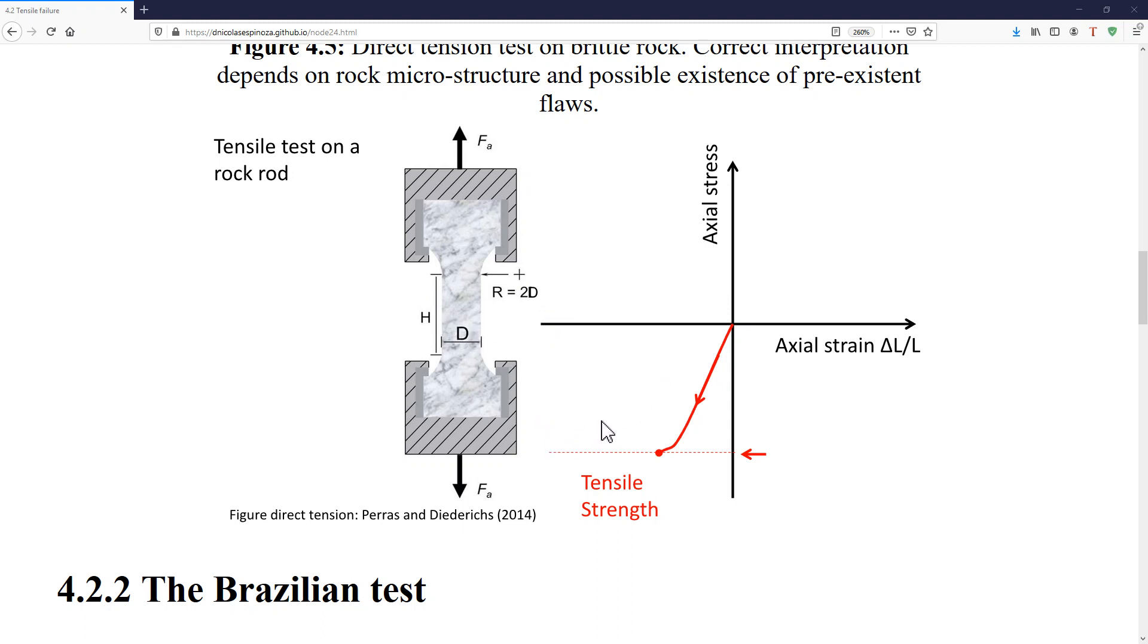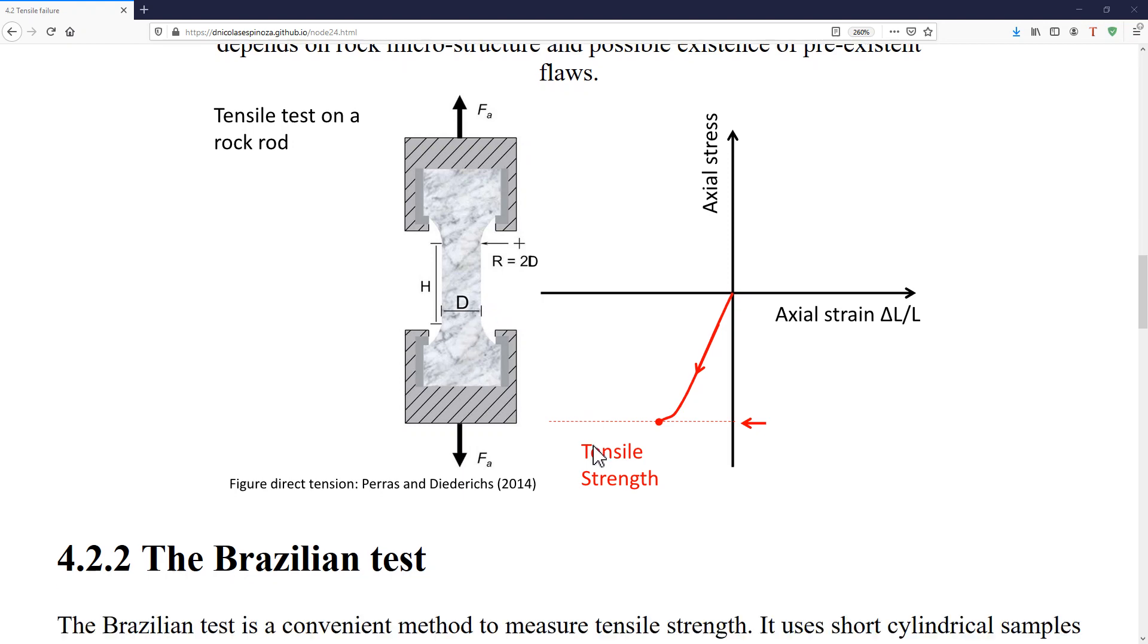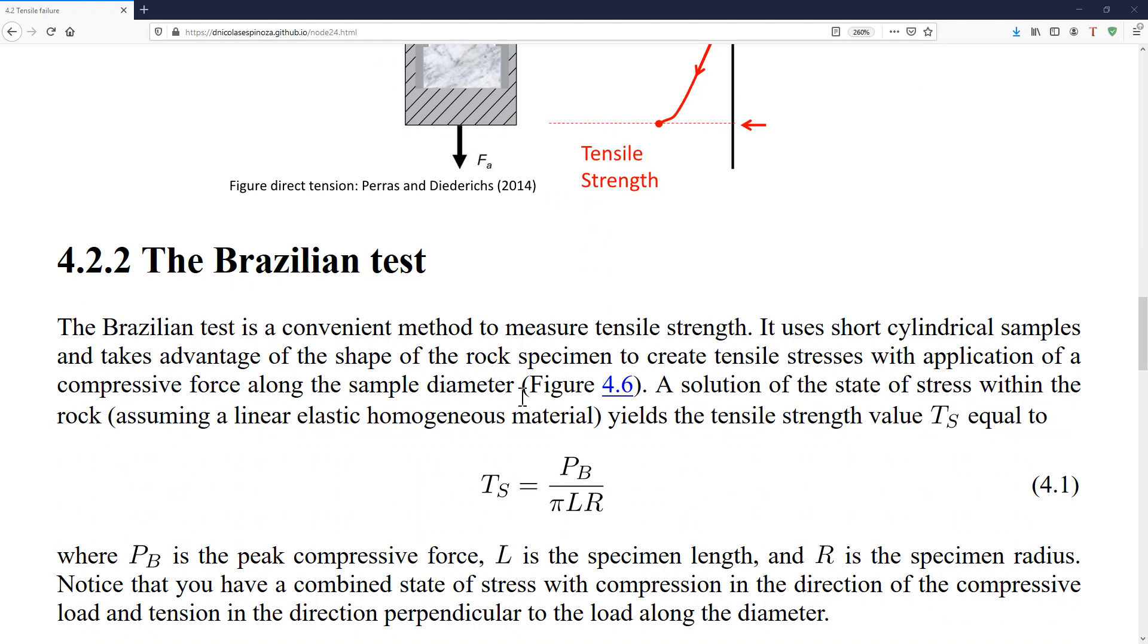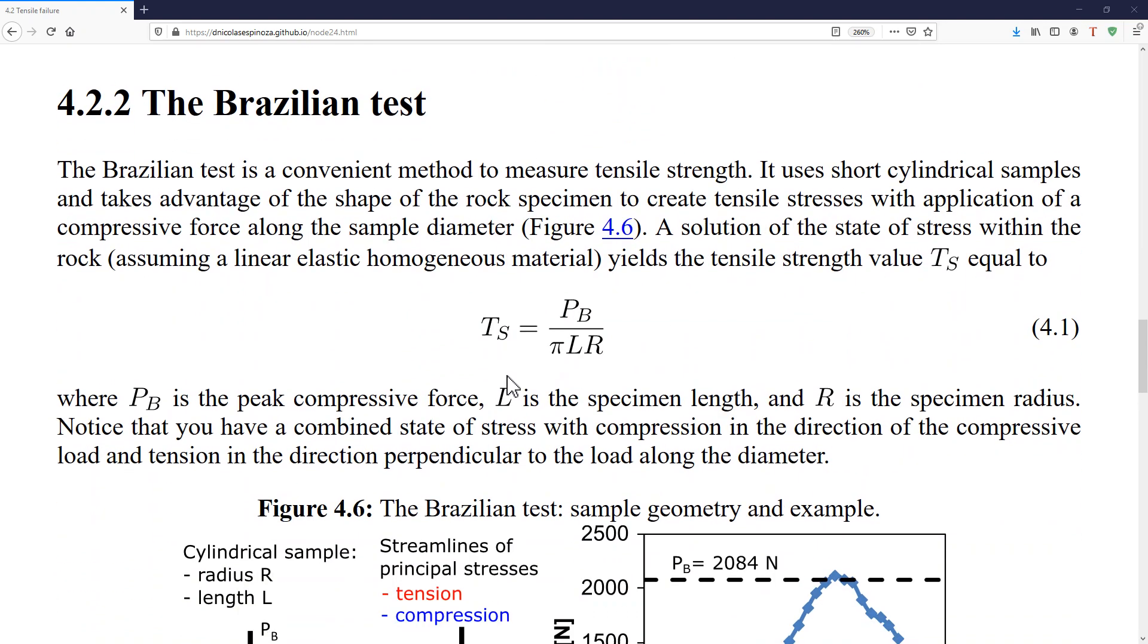Alright, so if we cannot measure this type of direct tensile strength in rocks, what do we do? Nothing? No, we have an alternative test, which is called the Brazilian test, and in the Brazilian test,